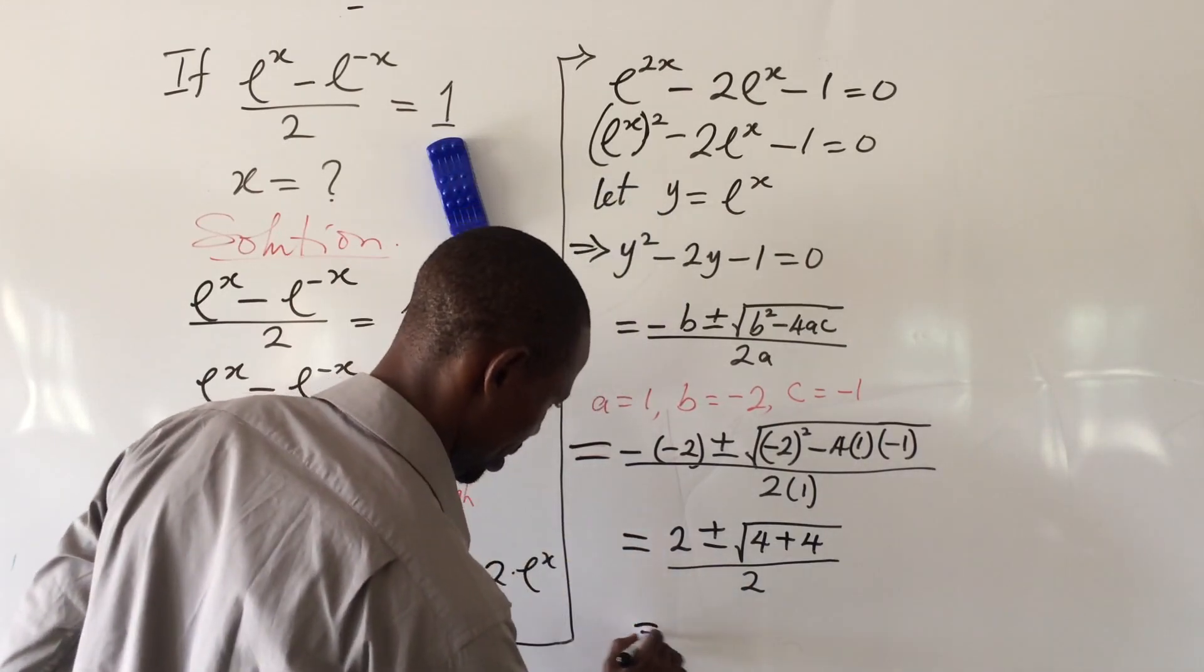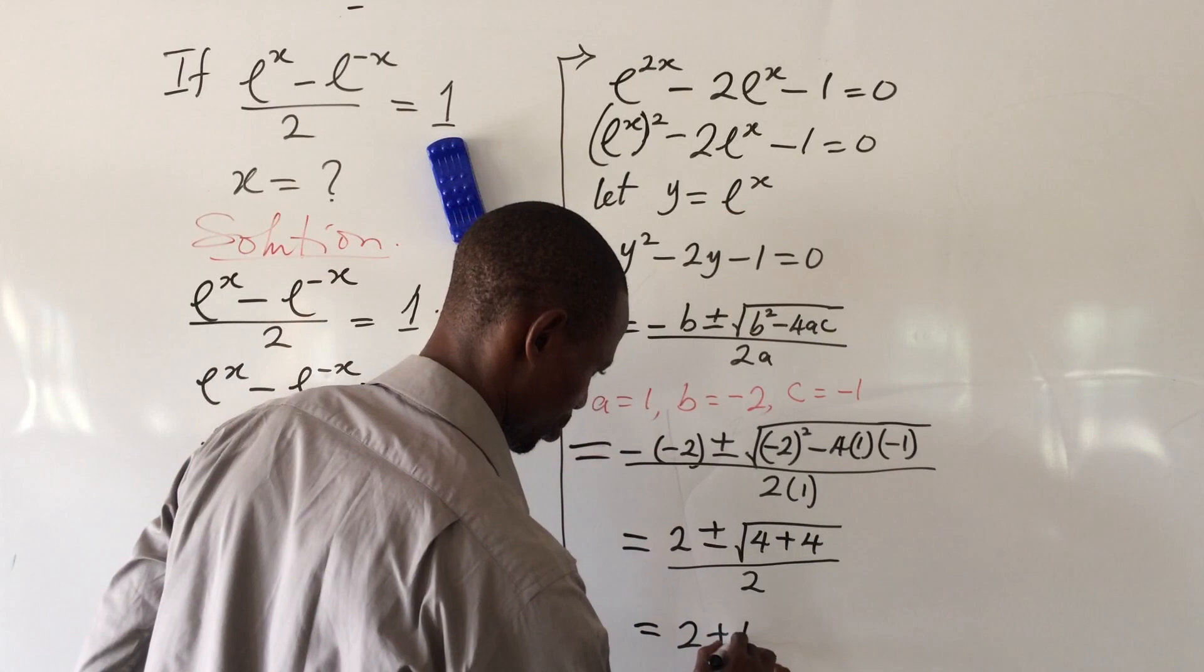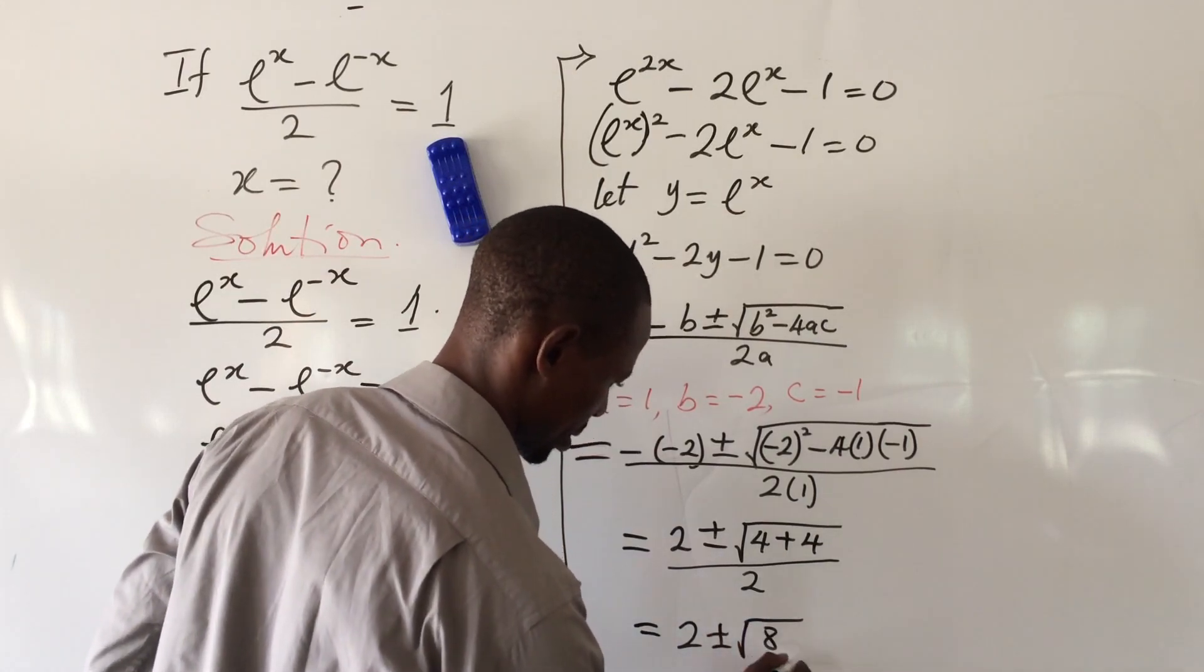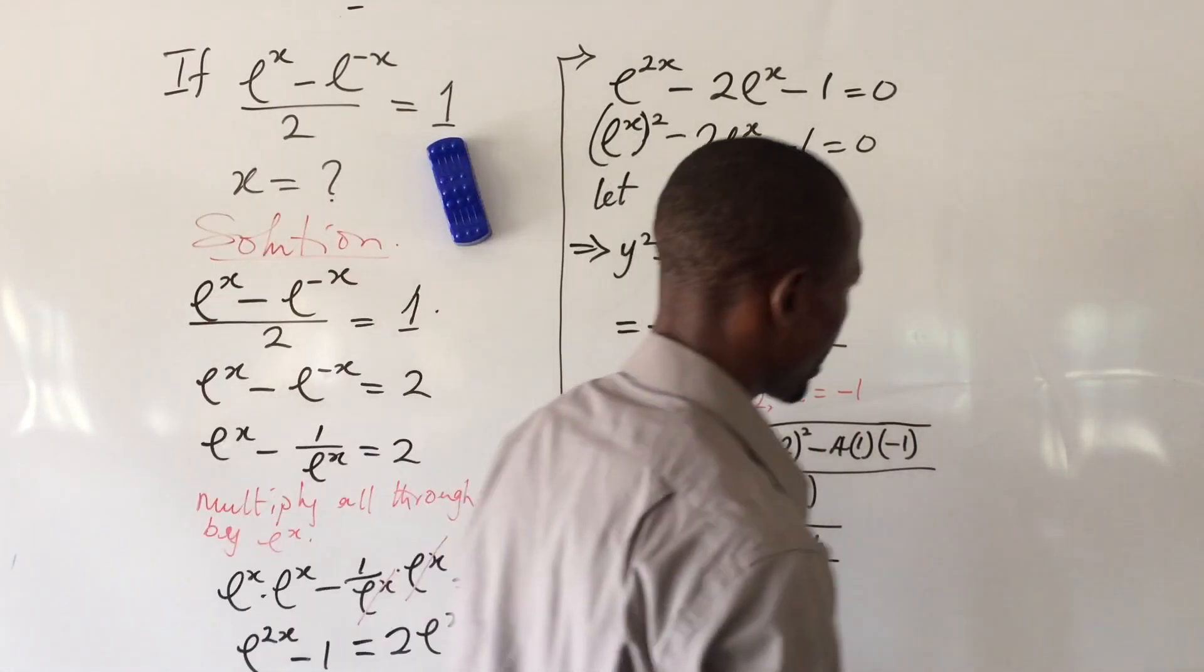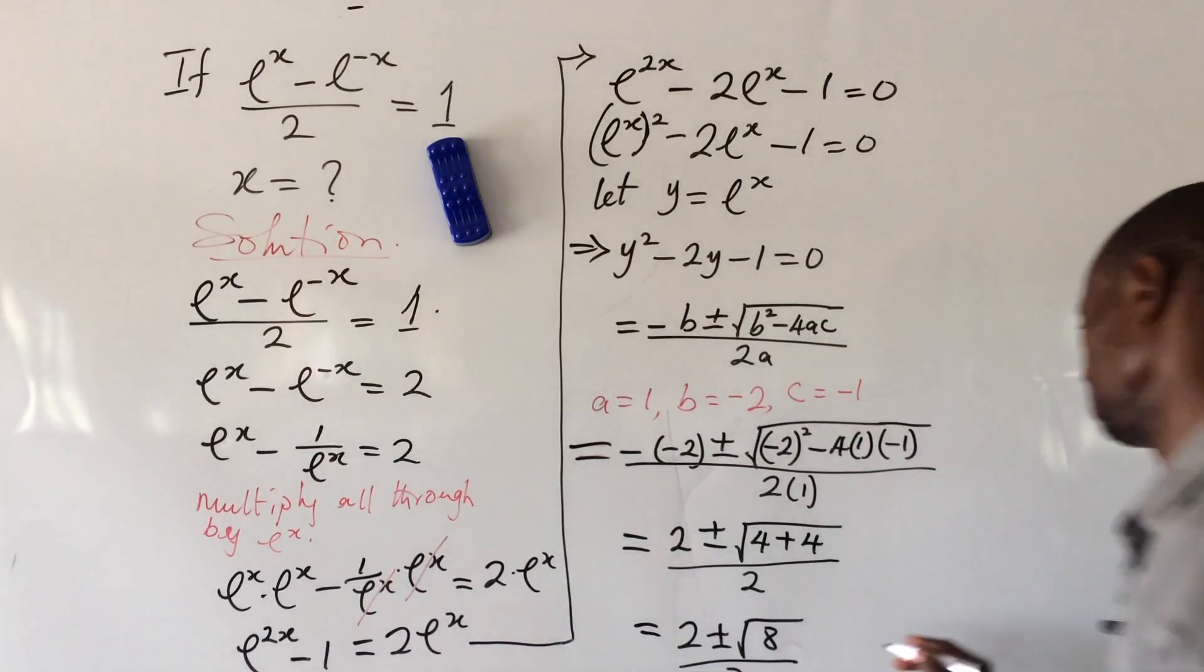If we go ahead, this gives us 2 plus minus root 8, all over 2.